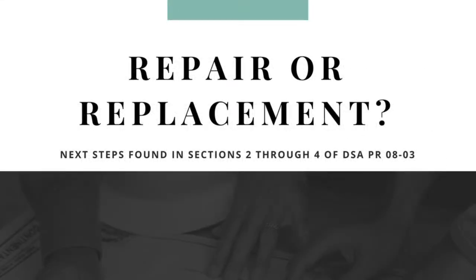Depending on if the facility is being replaced, which is considered phase 2, or repaired, which is phase 3, the district will go down one of two paths to continue the review process at the DSA. Detailed information on these steps and the requirements for each can be found in sections 2 through 4 of the DSA Procedure 08-03. If you have any questions on the application or evaluation process, please contact your DSA regional office directly.